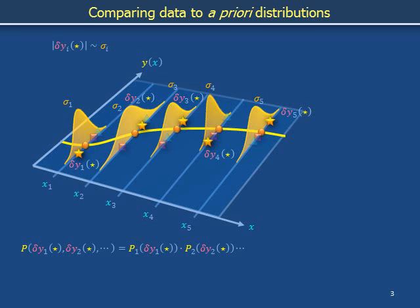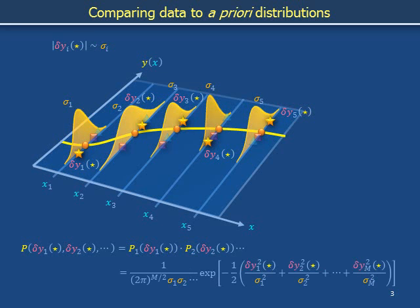Substituting Gaussian distributions into each of these probability distribution factors, and then combining the terms in their individual exponents into a sum — as we are allowed to do when exponents are multiplied together — we obtain a probability distribution in which the standard deviations, those sigmas, of the individual Gaussians appear in a denominator out front, and in which ratios of squared deviations to variances appear together in the exponent in a sum. This sum constitutes the guts of the probability distribution, and we give it a special name: chi-squared. Chi-squared is a sum over normalized squared deviations.